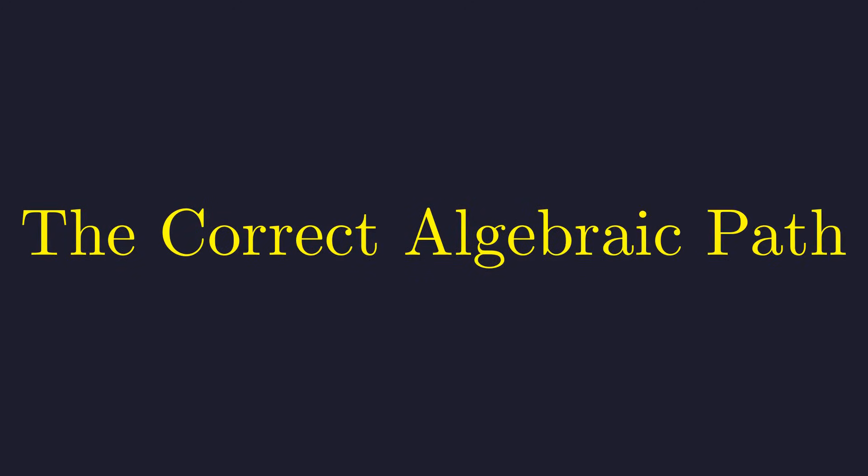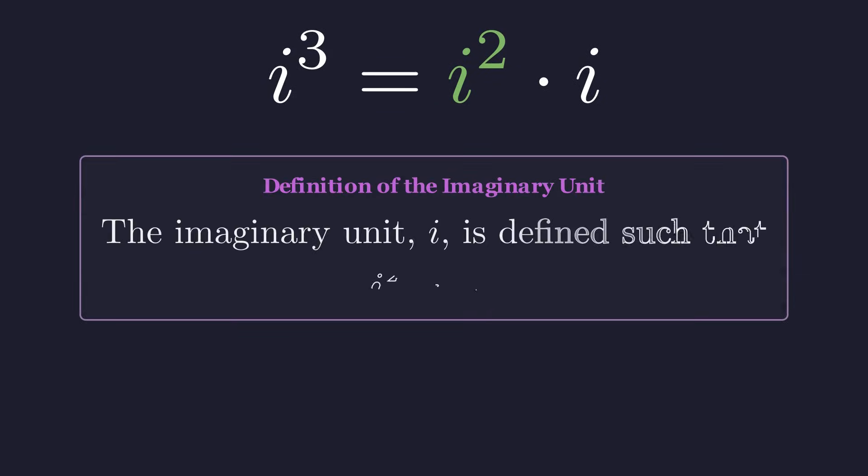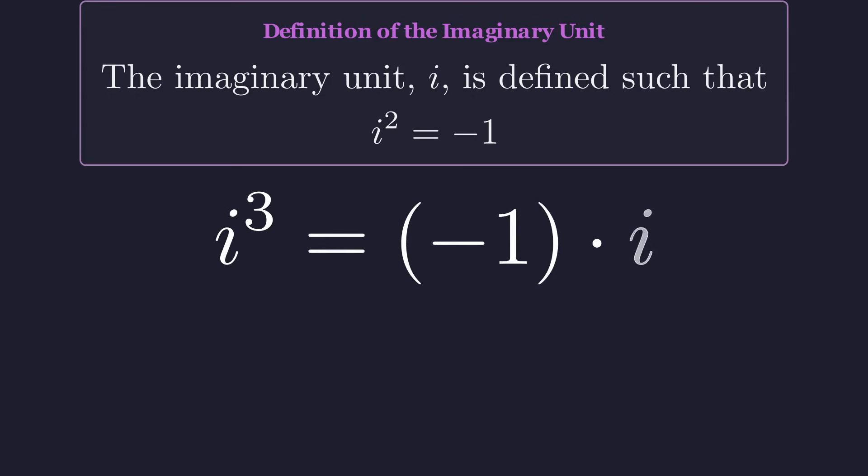Let's pause and take the algebraically rigorous path. This will show us what the answer really should be. So instead, we write i cubed as i squared times i. And the nice thing about this is that i squared has a very well-defined value. This is actually the defining property of i. It's the number whose square is negative 1. So we replace i squared with negative 1, which gives us negative i.